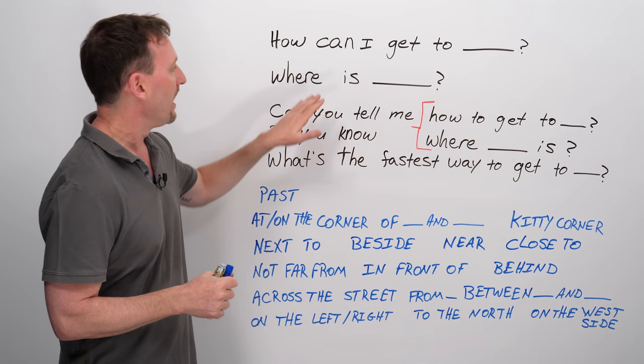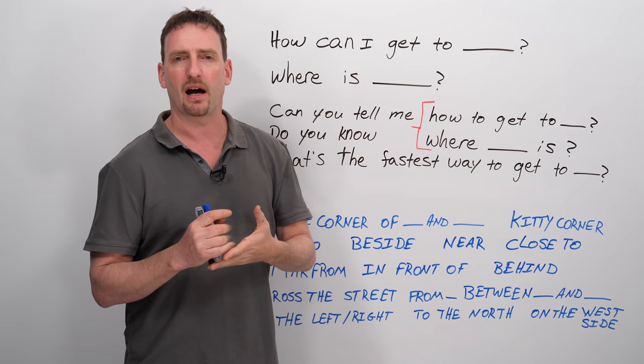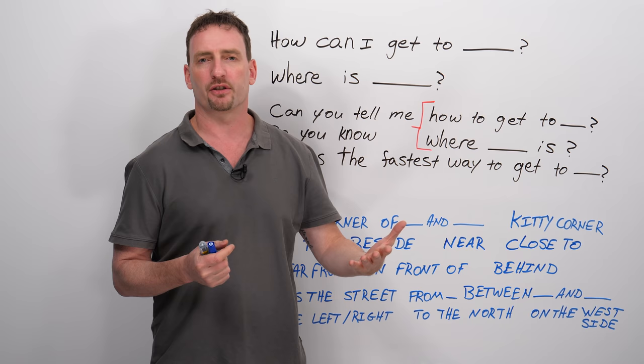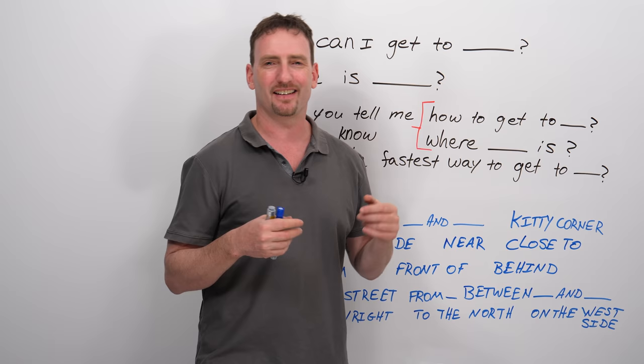Or more direct, where is something? Now, you have to keep in mind that if you're in certain countries, for example, in Canada, you can't really go up to a person and say, where is the train station? Canadians are a little bit more polite, a little bit softer. So it's better to have an indirect question, like this one.